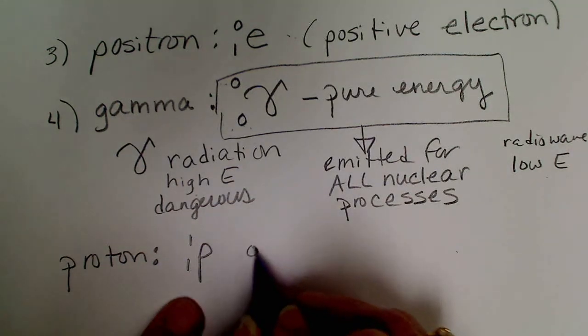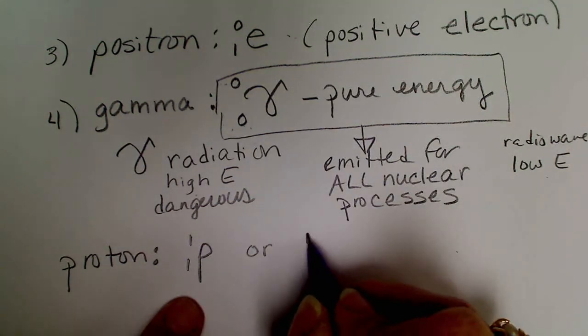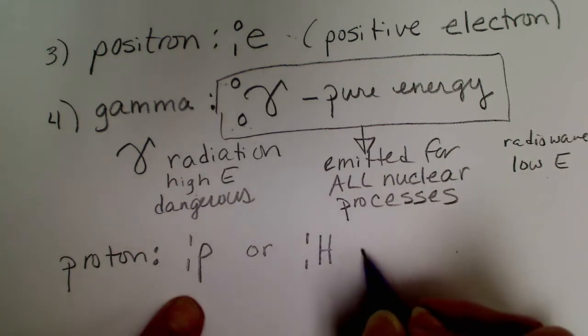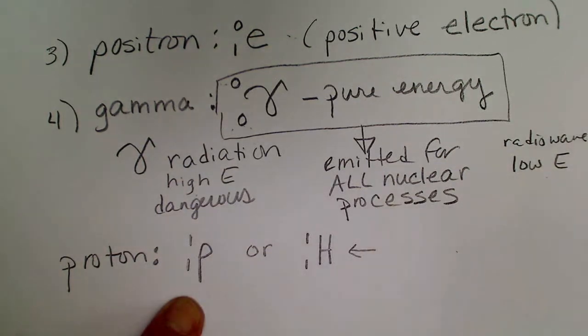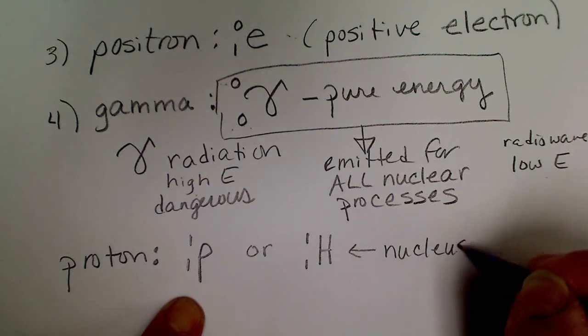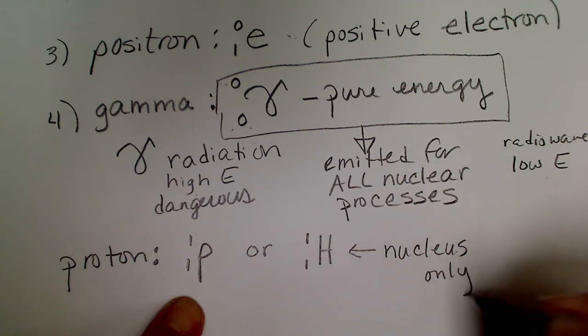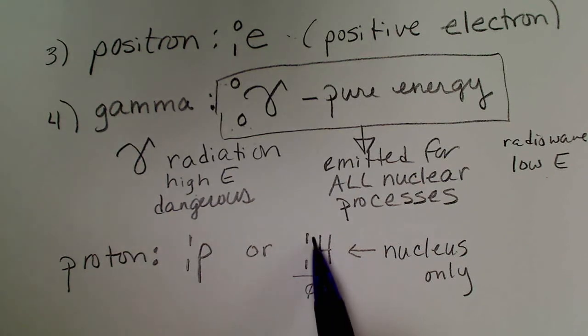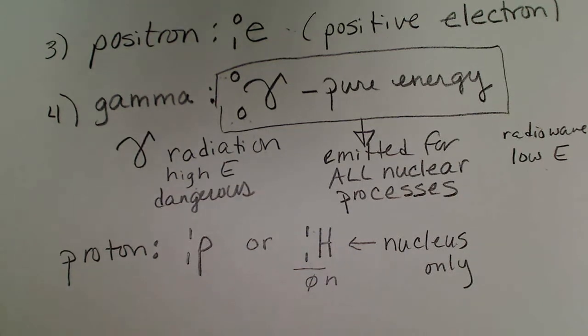We could also write this as the isotope symbol for hydrogen-1. Again, this looks like we're talking about an atom of hydrogen, but this would be the nucleus only. So hydrogen-1, remember, would have no neutrons.